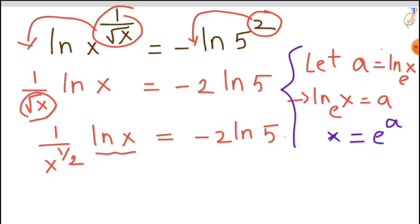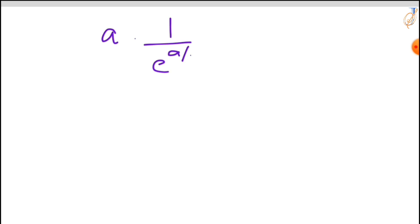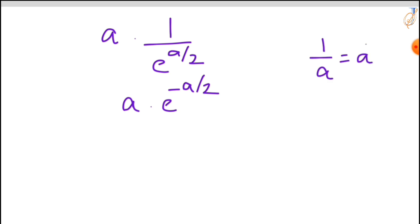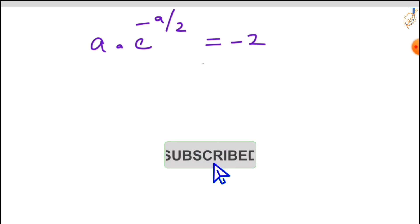Let's substitute these values into our expression. 1 upon x means 1 upon e^a, and x^(1/2) means e^(a/2). So the left-hand side becomes: a times 1 over e^(a/2), which we can write as a times e to the power of minus a/2. The equation is now: a times e^(−a/2) equals minus 2 ln 5.